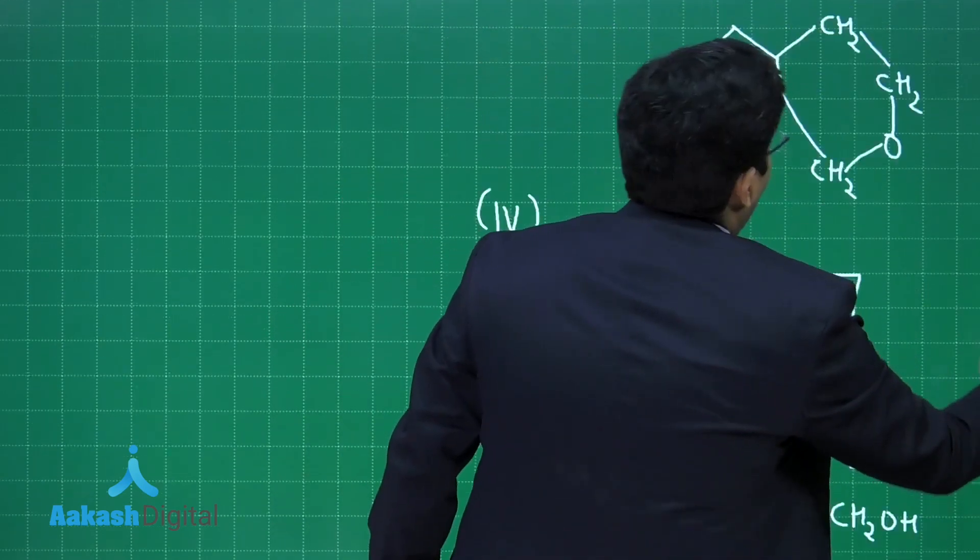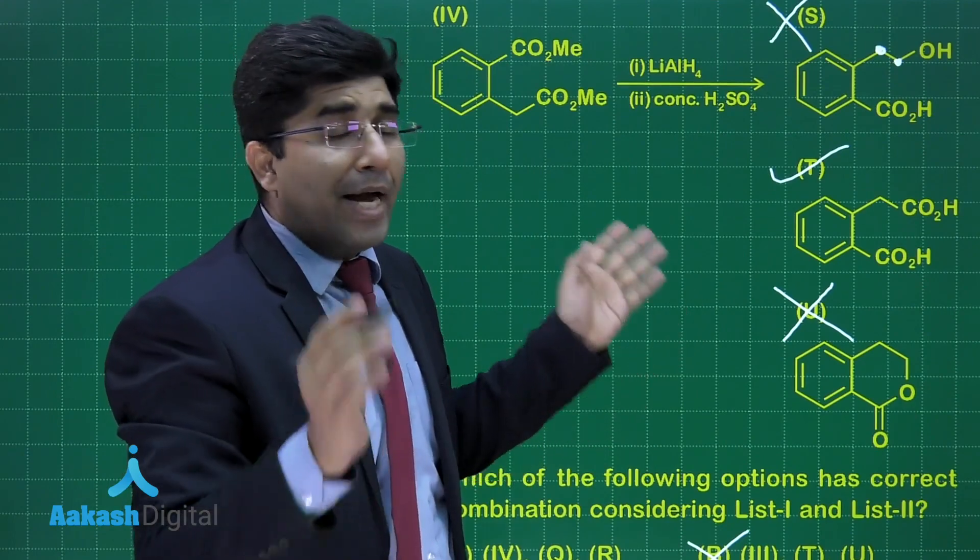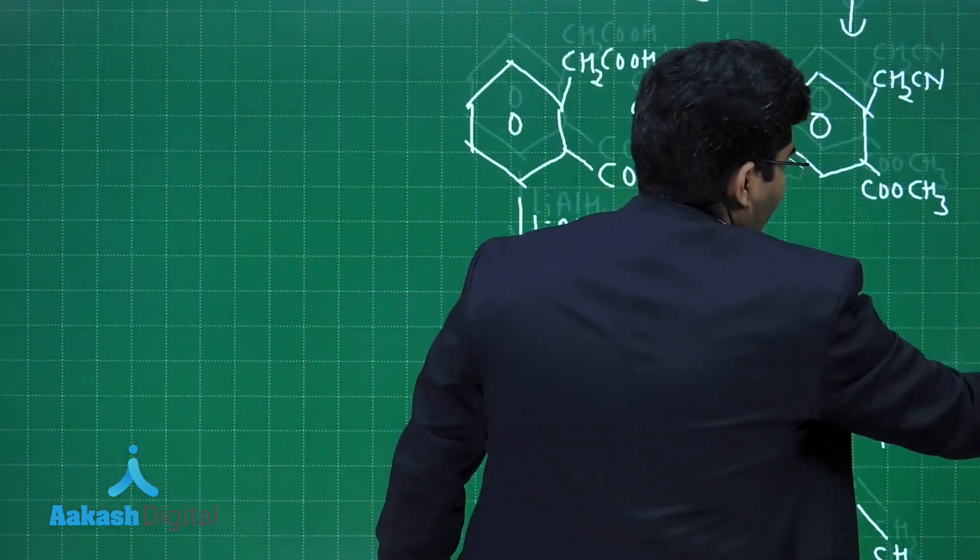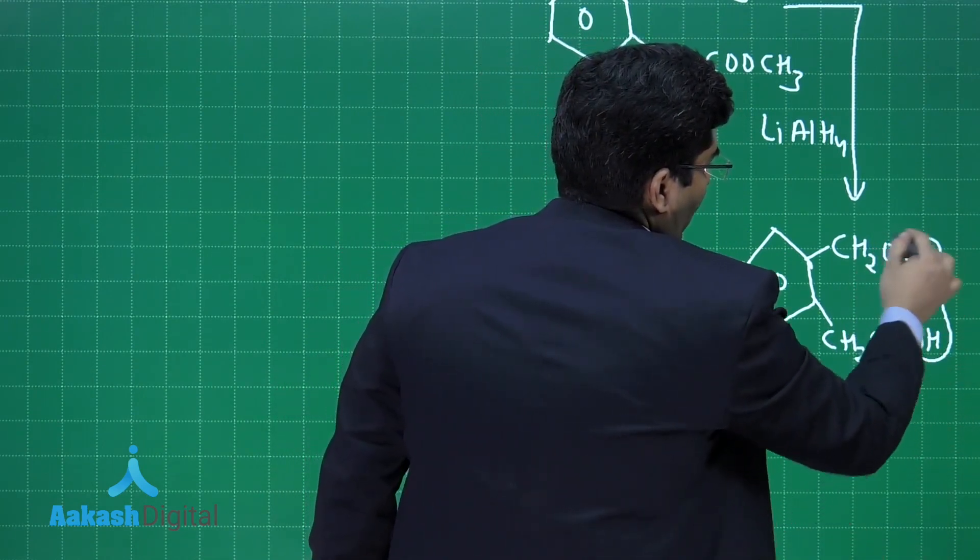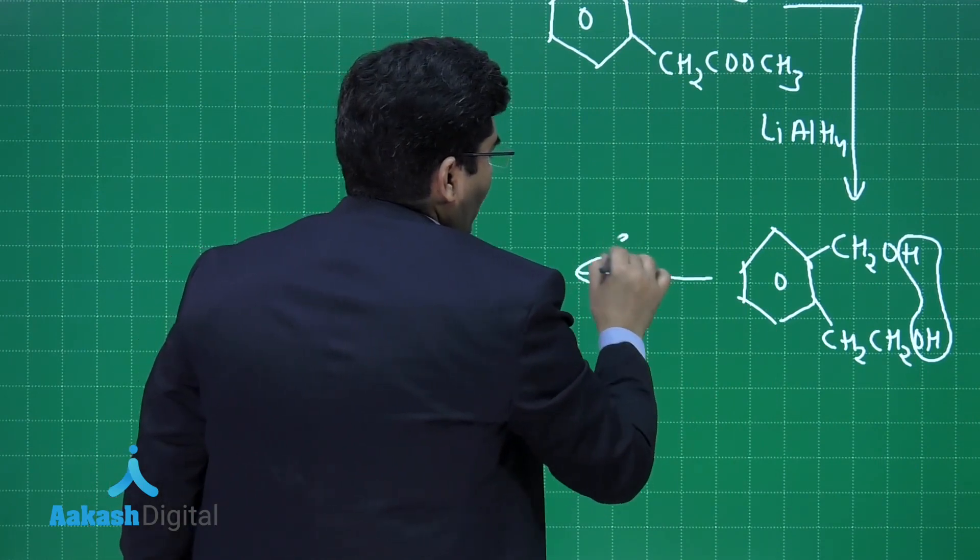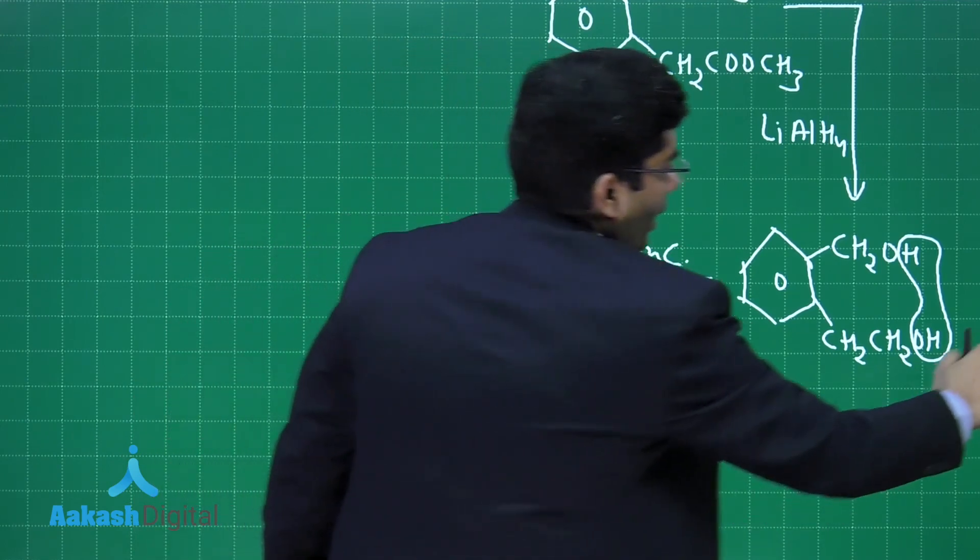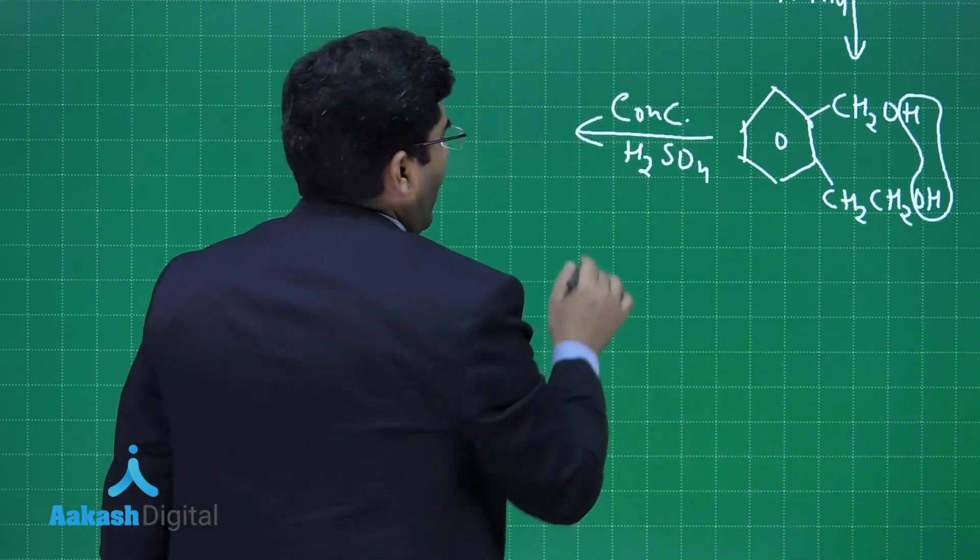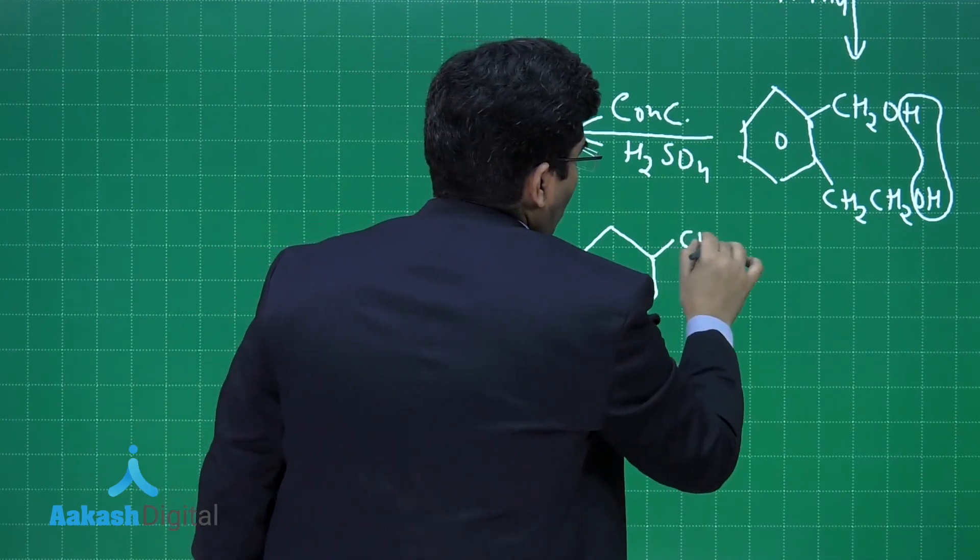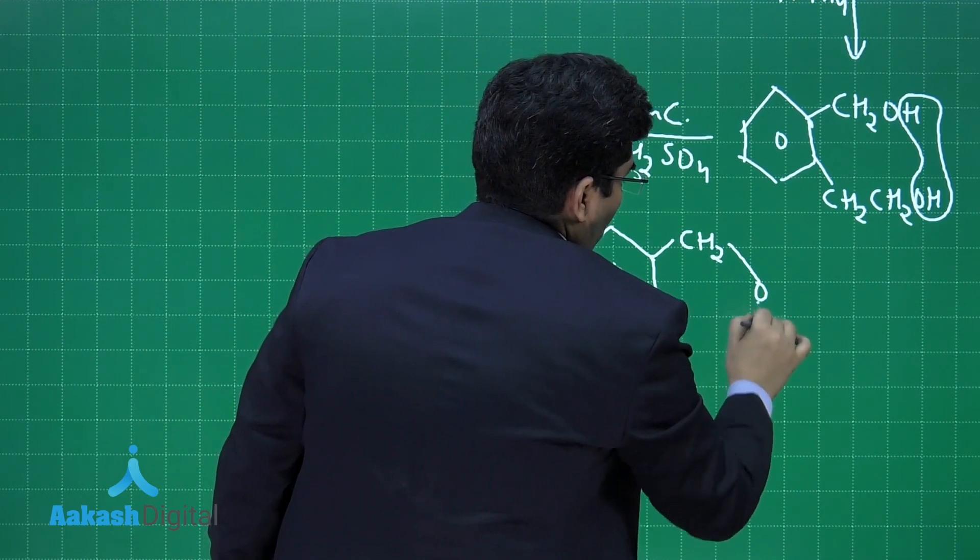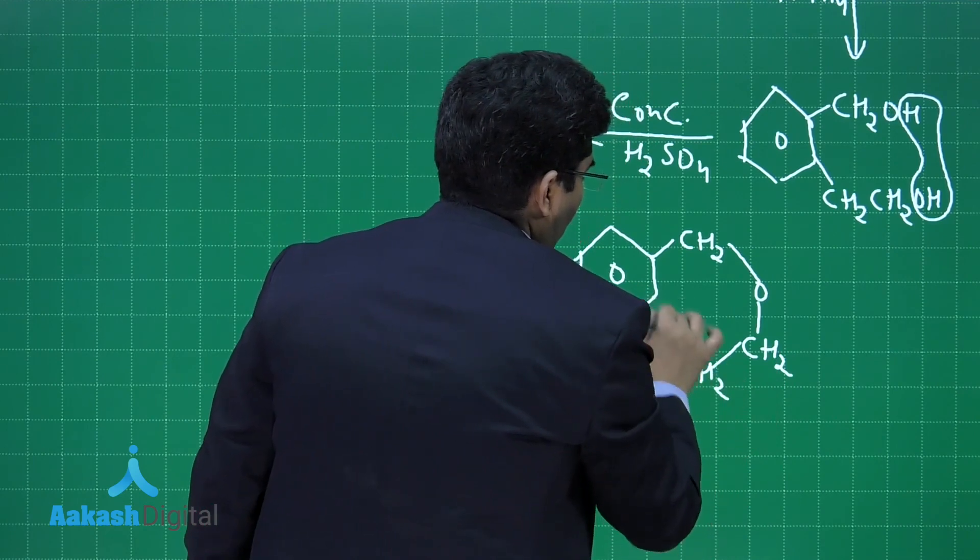This will be the product. In the last step, he is adding concentrated H2SO4, meaning dehydration will take place. If dehydration is taking place, we have to remove water from here. By this we will get a product. The final product will be CH2OCH2 and CH2. This is the product which we will get.